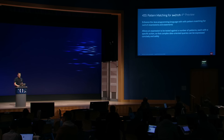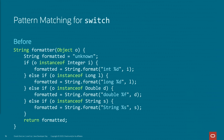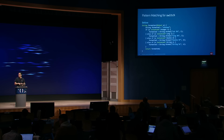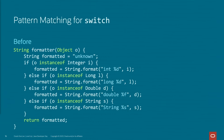JDK 20 also brings us pattern matching on switch expressions and statements. Using this feature, we can test an expression against a number of different patterns. In the past, switch statements used to work only on a few types like numerics, enums, and strings. In JDK 14, we introduced switch expressions and allowed other case labels, but you still couldn't test an object against an expression to see if it belonged to a particular type. The best we could do was a collection of chained if-else-if statements. Pattern matching for switch extends the case labels to include patterns and null, so we can make this code dramatically simpler.